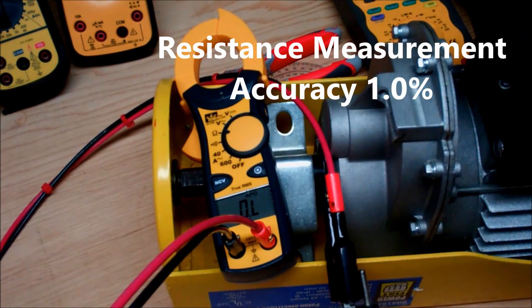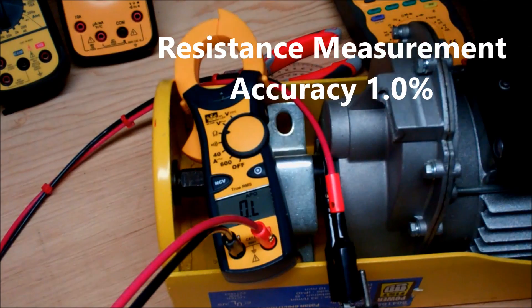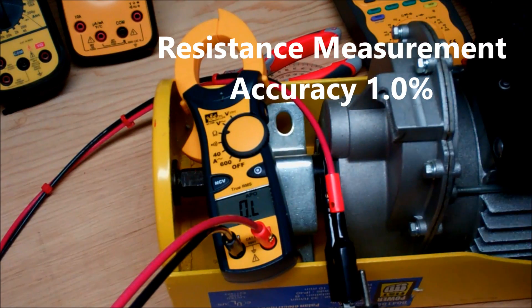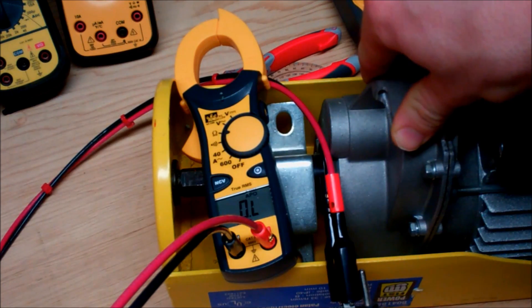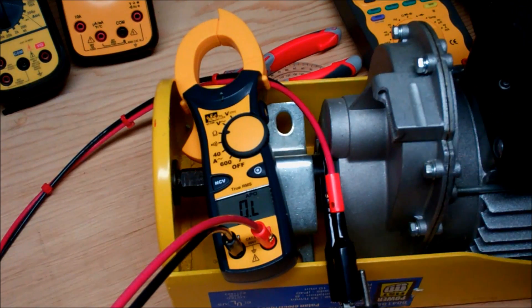So now what I got here is an induction motor, and I want to see how this thing does for resistance measurement on the low end. So what I did is I took a four terminal resistance measurement of this and I got 1.6 ohms. So I'm going to create the pathway and let's see what we register on this multimeter.